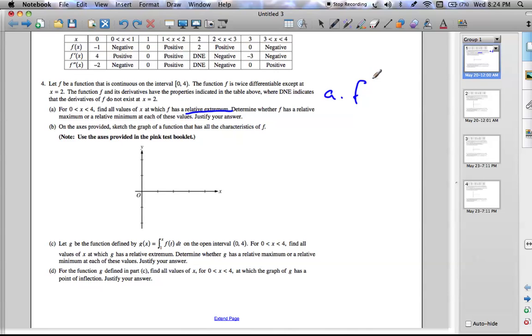So f' must change sign in order for f to have local max or min. And when f' goes from negative to positive, we know that means it is a local min. And when it goes from positive to negative, we know it has a local max.